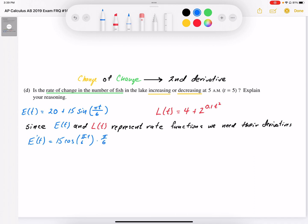And I can plug in the value at 5, E'(5), and that's going to give me a value of negative 6.8017.